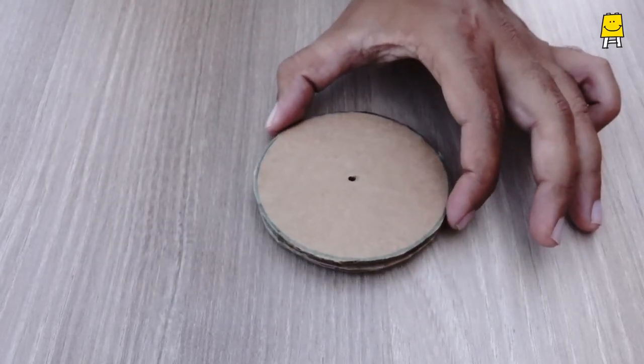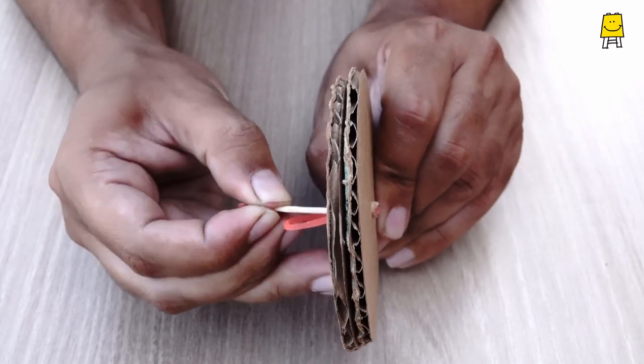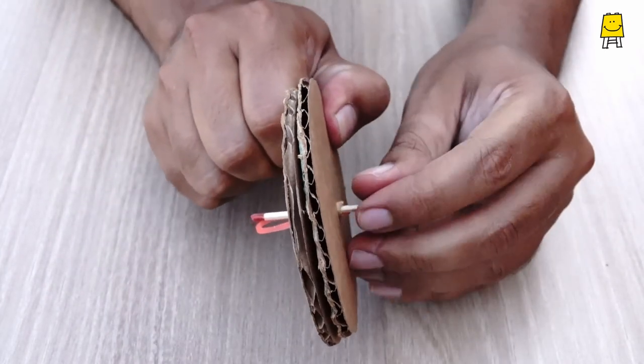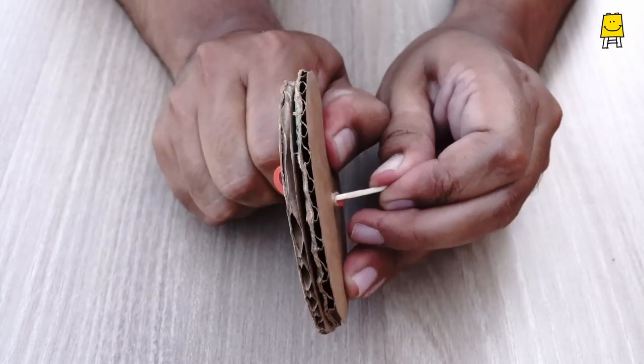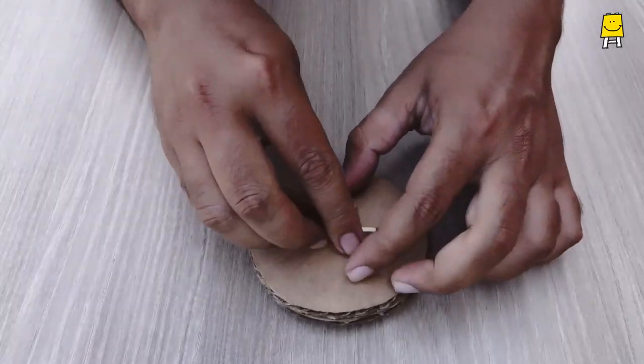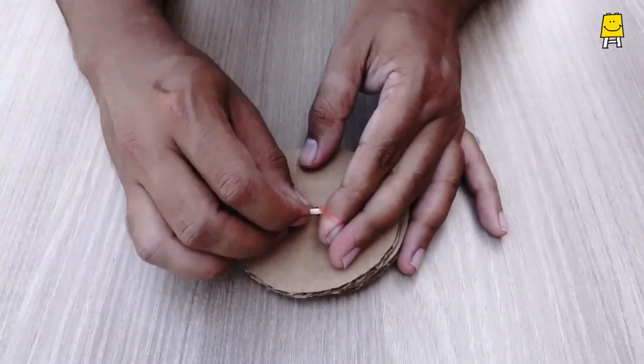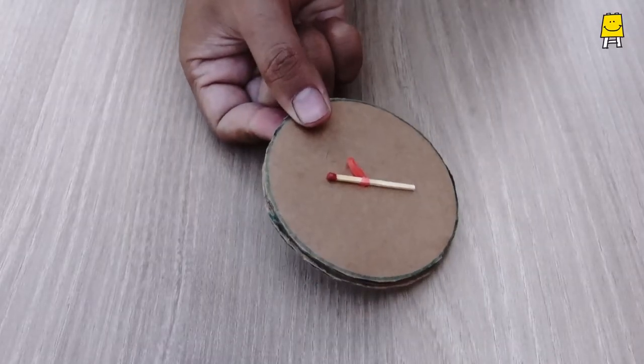Put the discs together and pass a rubber band through the holes. Put a matchstick on each side through the rubber and secure it with a knot.